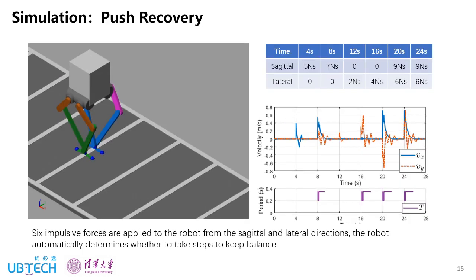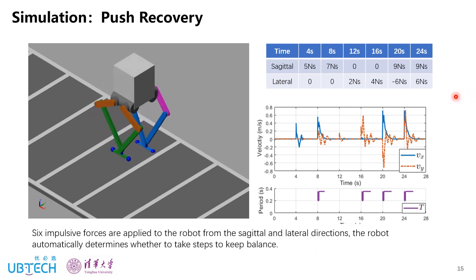And this is the push recovery simulation. Six impulsive forces are applied to the robot from the sagittal and lateral directions. The robot automatically determines whether to take steps to keep balance. And we can see that the instant speed change is up to 0.7 meter per second for the X direction and 0.5 meter per second for the Y direction.